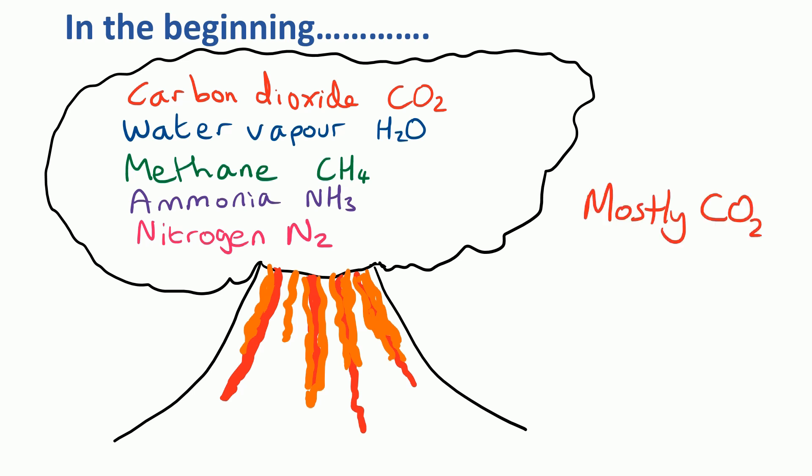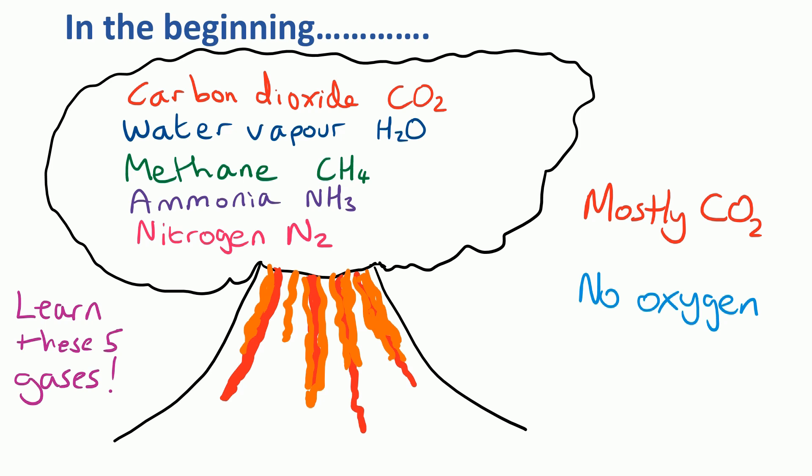By far the most abundant gas was carbon dioxide, so there was a lot more carbon dioxide than any of the other five gases. You'll notice at this stage there's no oxygen in the atmosphere, but it's really important you learn these five gases that form the early atmosphere.